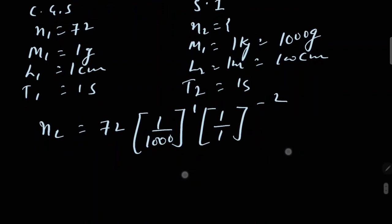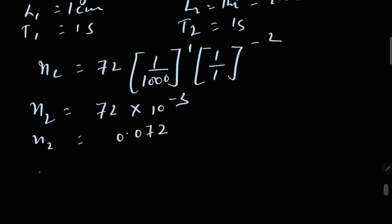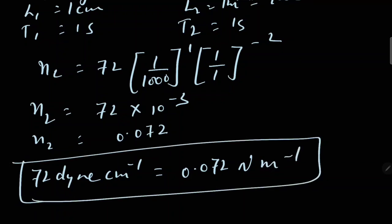After solving this we will get the value of n2 is 72 multiplied by 10 raised to power -3, or this can be written as 0.072. So in SI system of units, 72 dyne per centimeter can be written as 0.072 newton per meter.